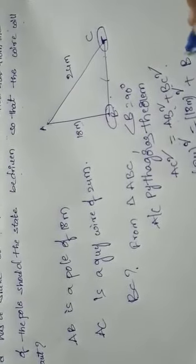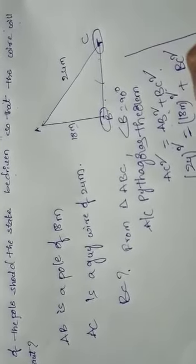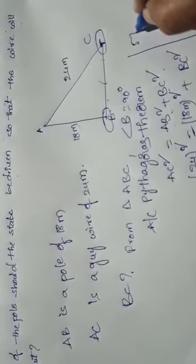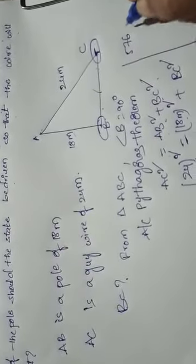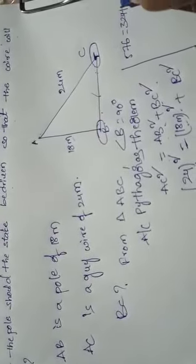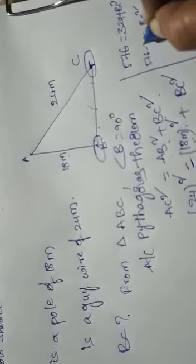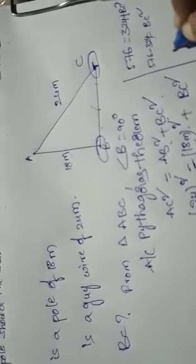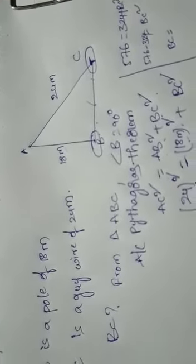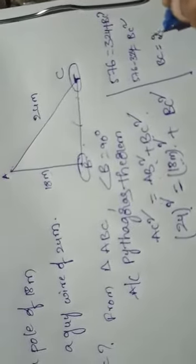BC square, we don't know BC. 24 whole square is 576. 18 square is 324 plus BC square. Here BC square equal to 576 minus 324, which is equal to 252.